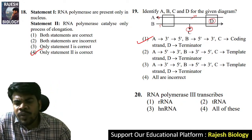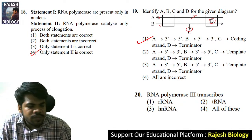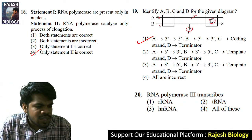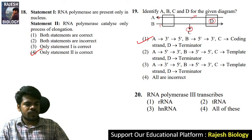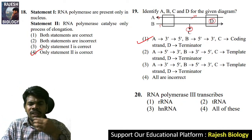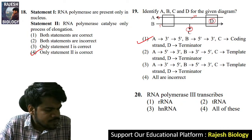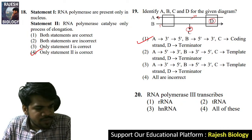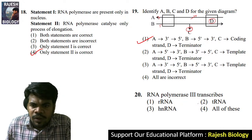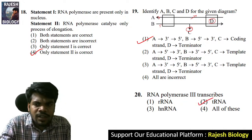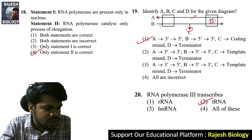Question 20: RNA polymerase three transcribes which RNA — rRNA, tRNA, hnRNA, or all of these? The right answer is tRNA. Jnaneshwari, very good. Dinesh and Aparna Patipanda, you are right.